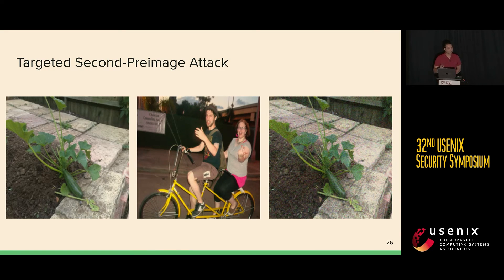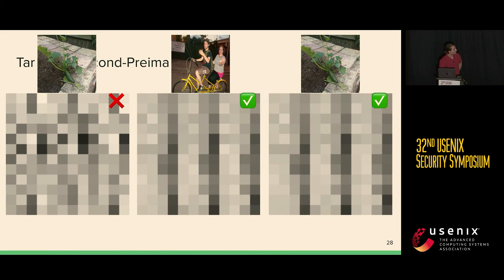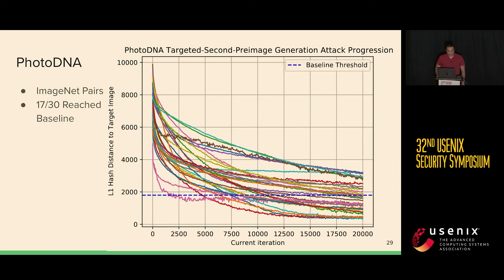Let's get into some results. As a preface, I am definitely cherry picking the best result here. But I just want you to ask yourself: which of these two images would you consider a match? Assuming that none of you are artificial intelligence, I would hope that you all say the two cucumbers are considered the same image. However, let's pull up what their PhotoDNA hashes are — with this perceptual hash function, these two images on the right are now hashing to what is effectively the same, whereas we can see that they are very clearly not. We performed this attack on 30 randomly chosen image pairs from ImageNet, and for PhotoDNA, 17 of them reached a baseline within our target of 20,000 iterations — in fact a lot of them reached far below that baseline of what a hash collision is considered.